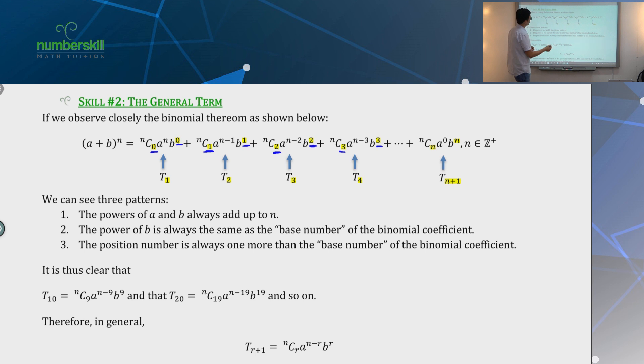Not only that, we also know that the power of A is related to the power of B. Because if this is 1, then this must be N minus 1. If this is 2, then this must be N minus 2. They always add up to become N. So if you know that this is 3, this must be N minus 3. So that's the pattern.